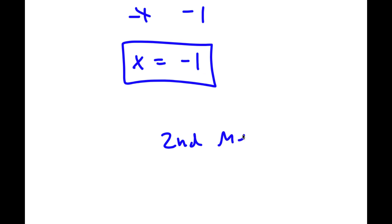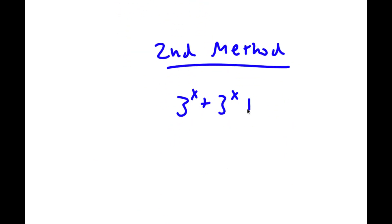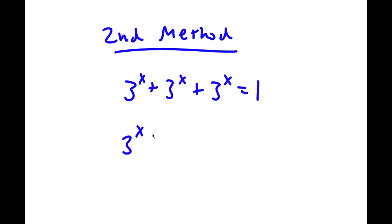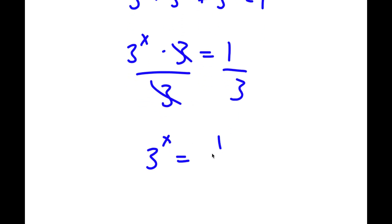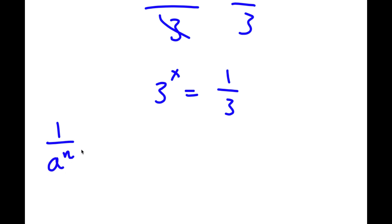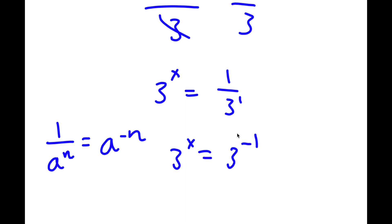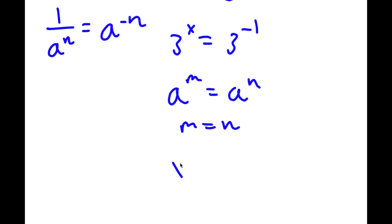Now I have a second method for solving this problem. Starting again from 3 to the power of x times 3 equals 1, instead of combining the exponents, I'm going to divide both sides by 3. These two cancel out, leaving 3 to the power of x equals 1 over 3. Using the rule 1 over a^n = a^(-n), 1 over 3 to the power of 1 equals 3 to the power of negative 1. So x equals negative 1.